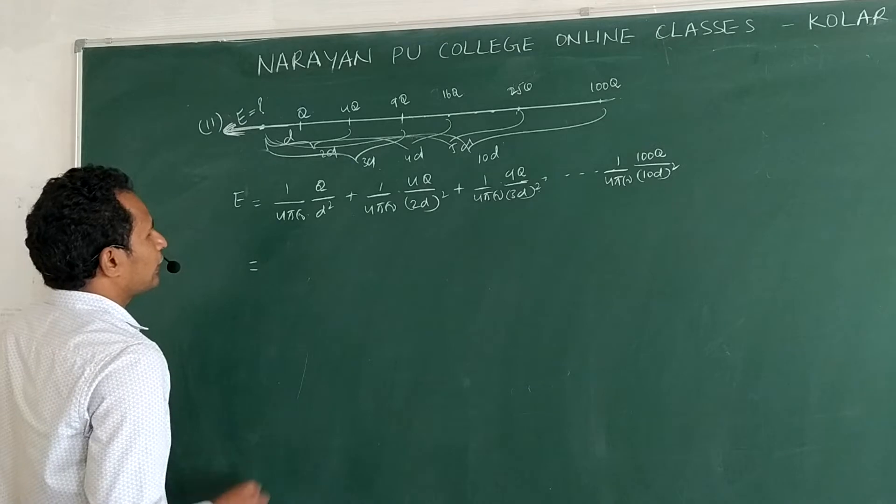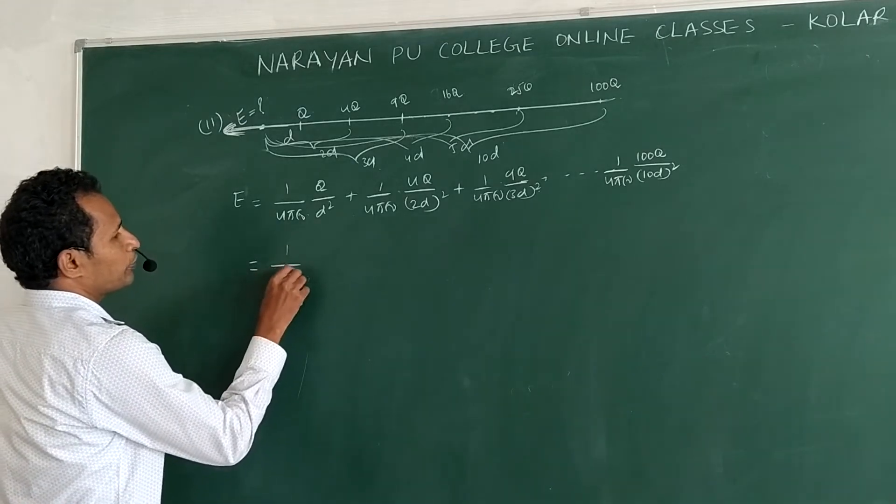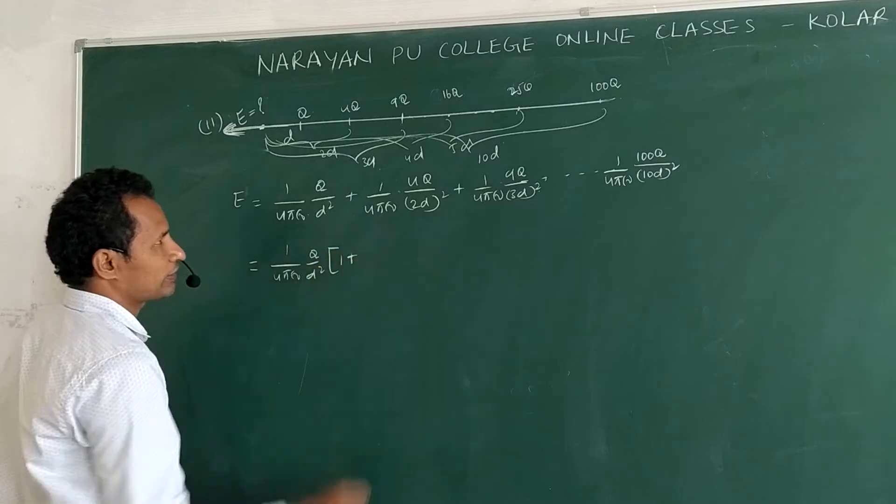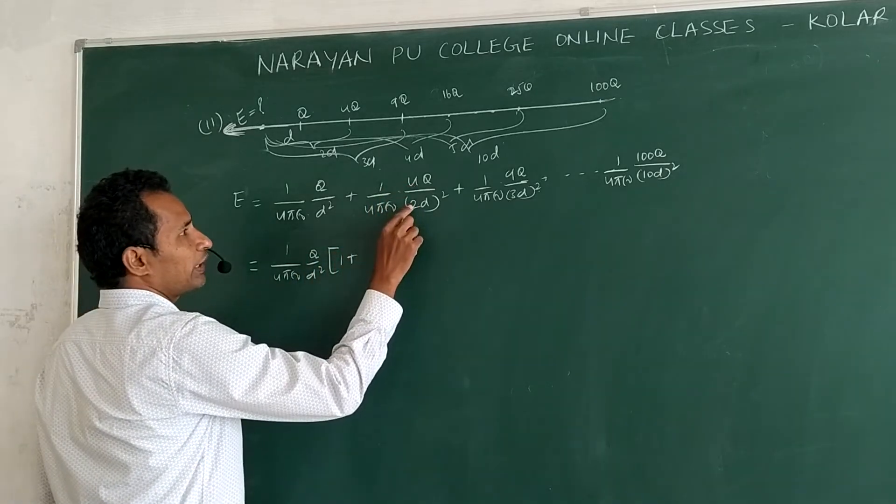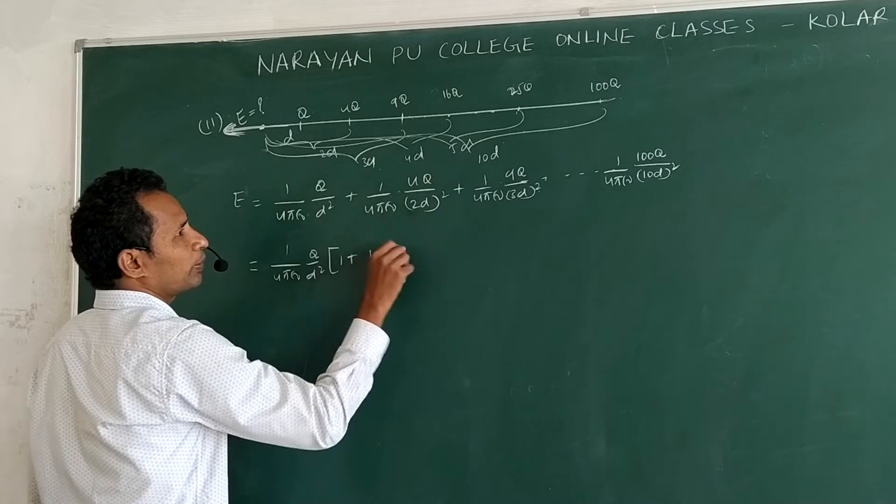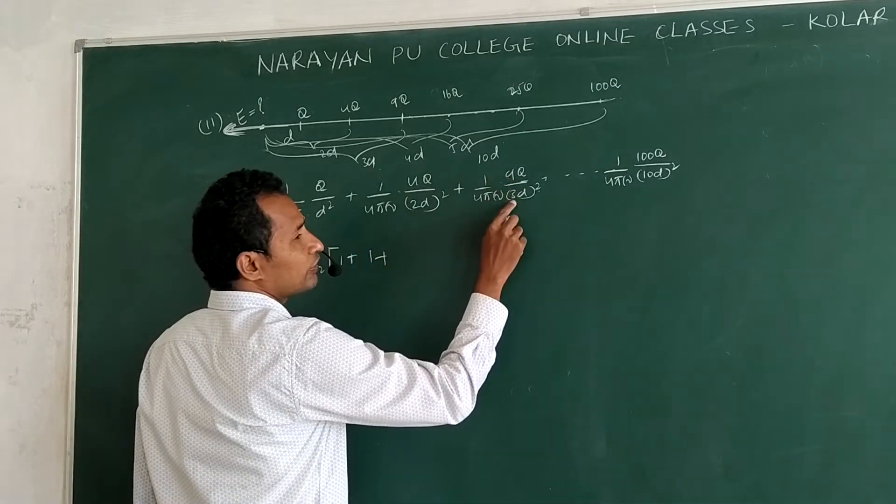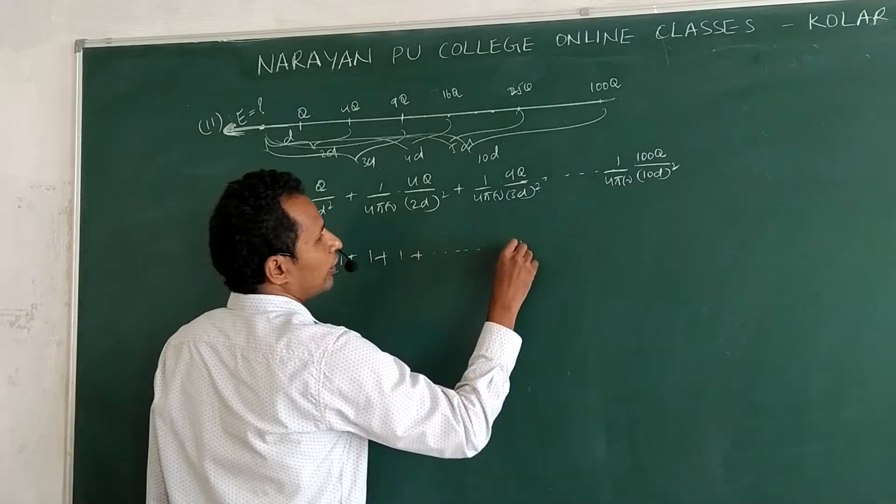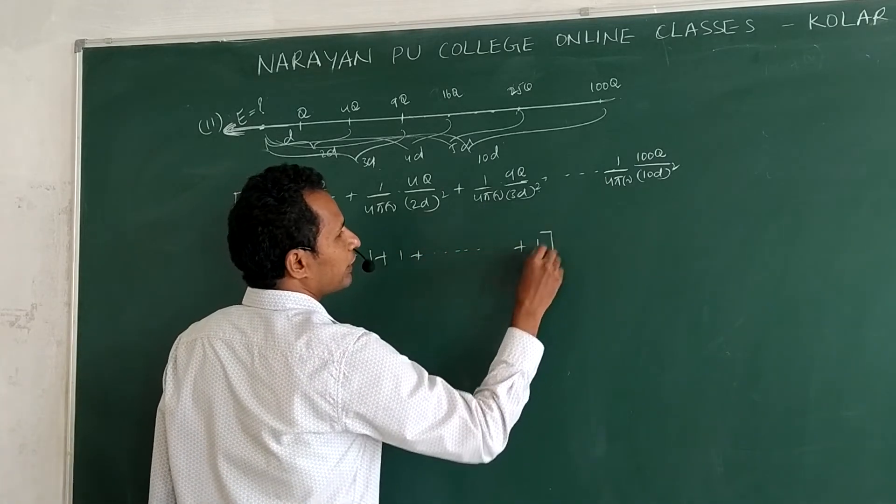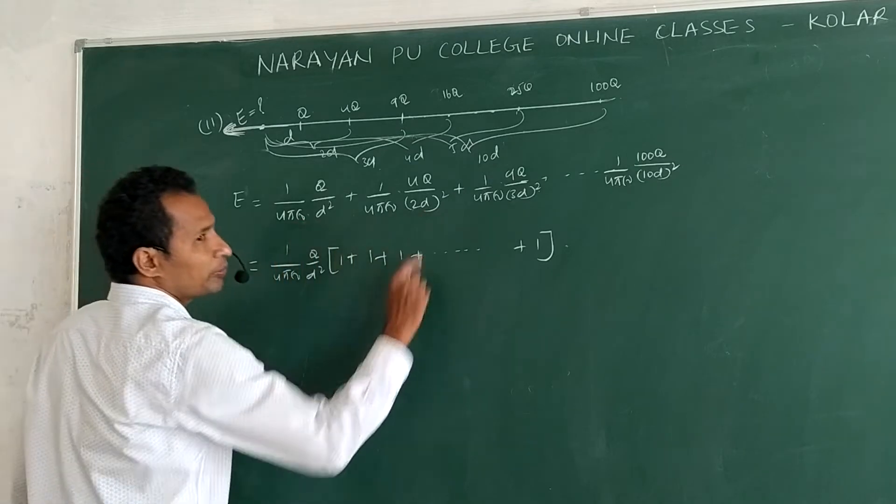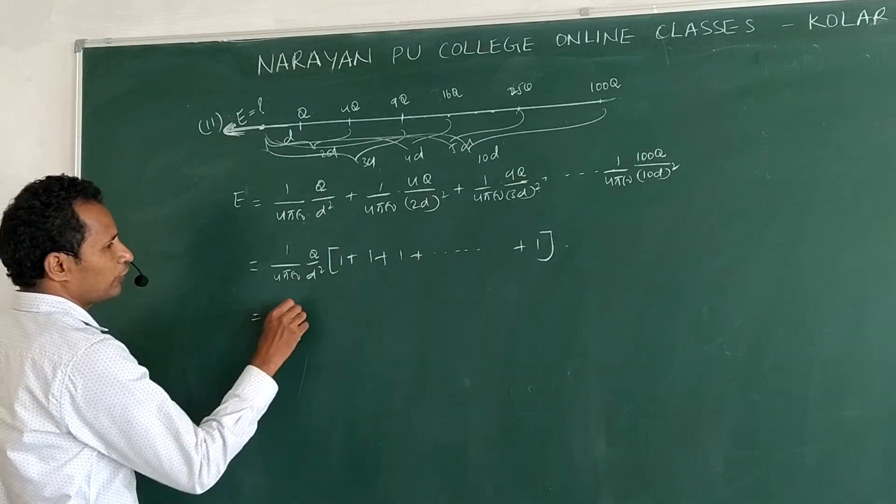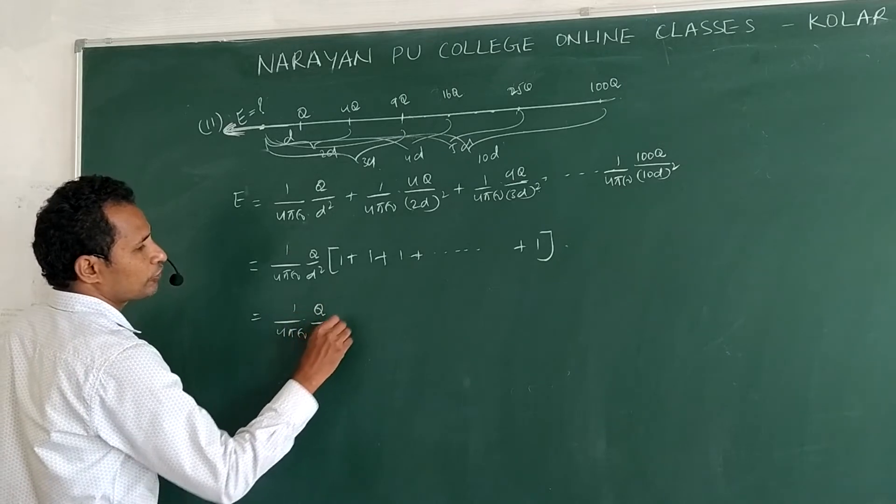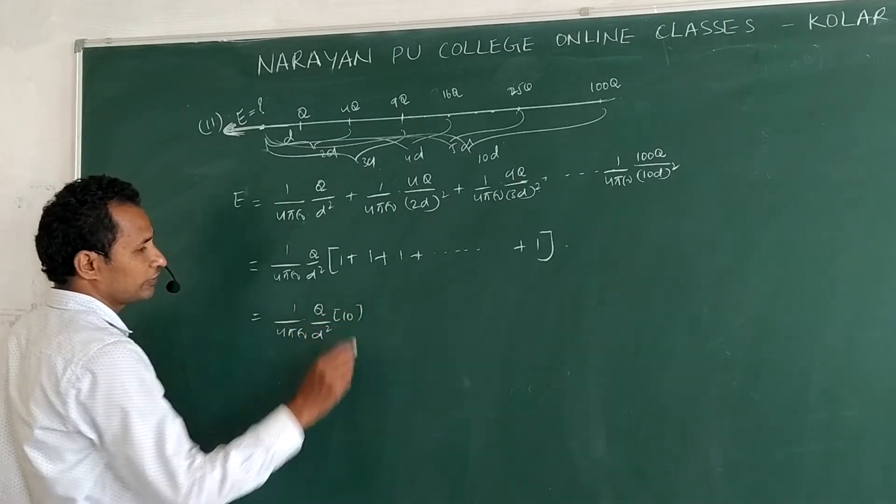If you take common 1 by 4 pi epsilon naught Q by d square, if you take common 1 plus 4 by 2 square, 4 cancel, 1 plus 9 by 3 square cancel, 1 plus up to 10. So total how many terms are there? 10 terms.